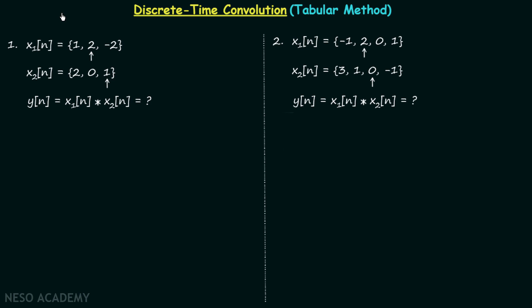In the last lecture we got the idea of discrete time convolution. Now in this lecture we will understand how to perform discrete time convolution using a simpler method known as the tabular method, and we will understand it through two examples.